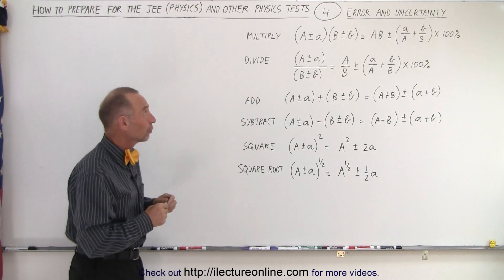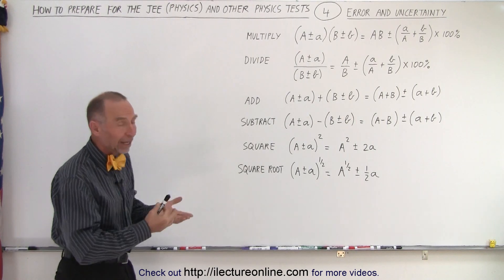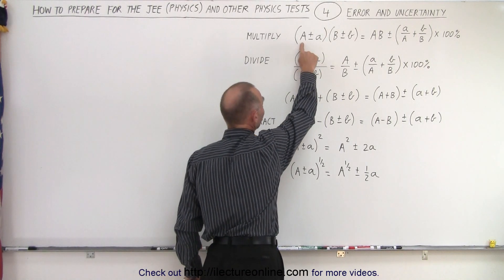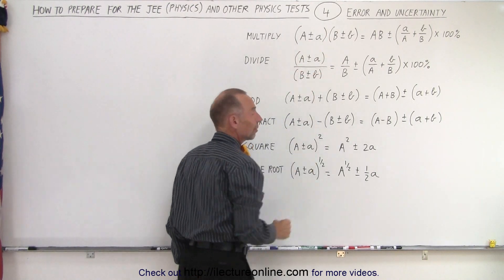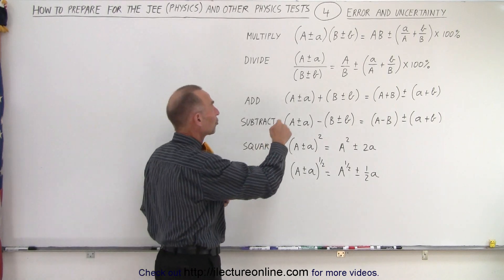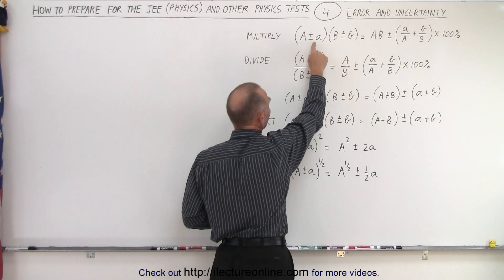So here the first thing we're going to do is talk about errors and uncertainty. Now whenever we take measurements, let's say we measure something and we find it to be A, there's going to be some uncertainty in that measurement. It could be a little bit more, a little bit less than what we measured, and that's what's called plus or minus the uncertainty.